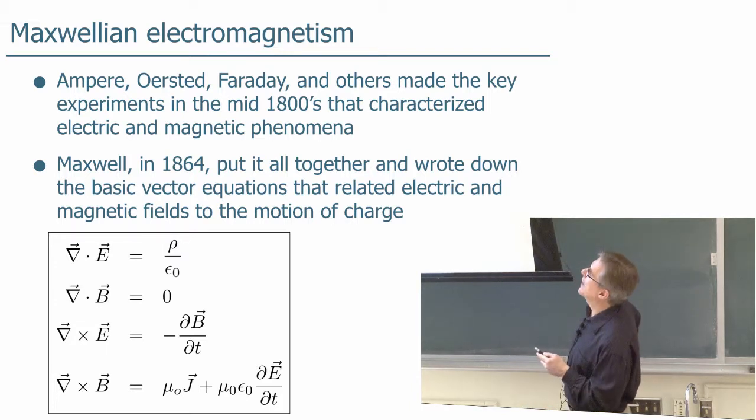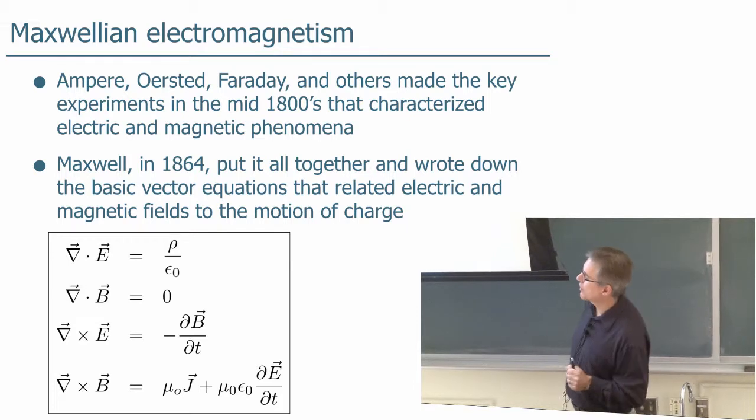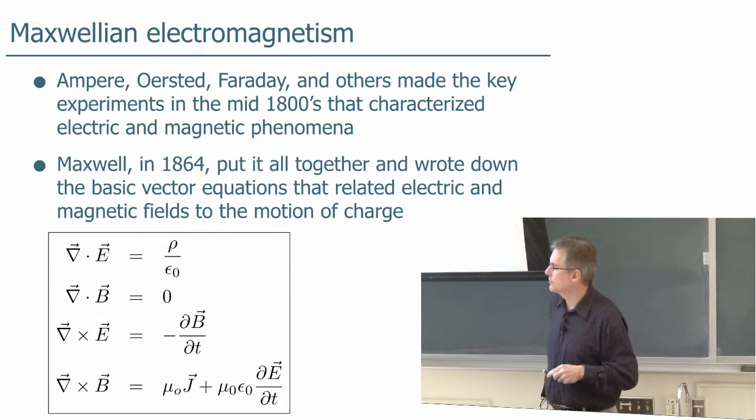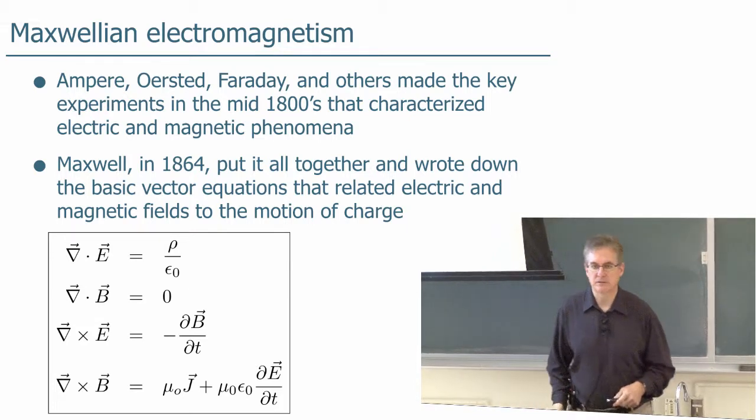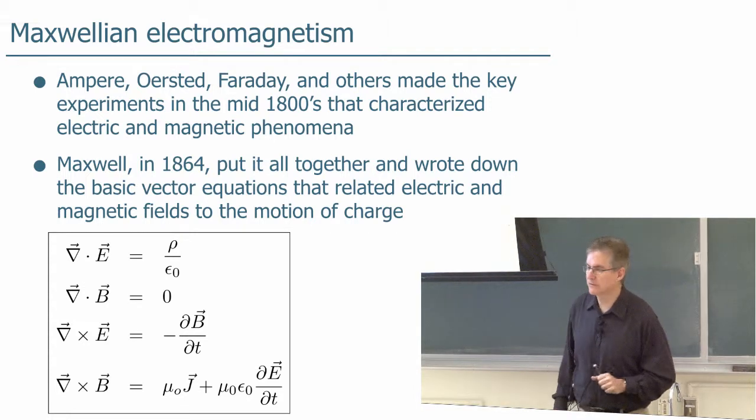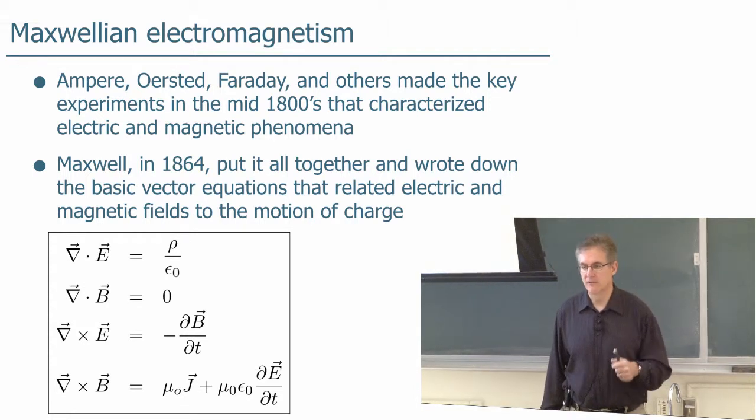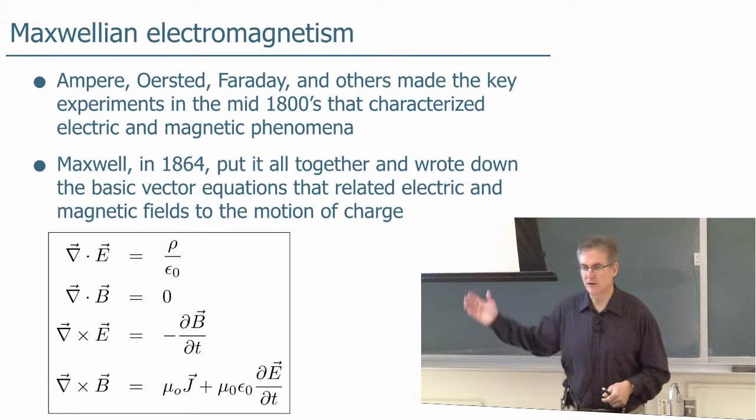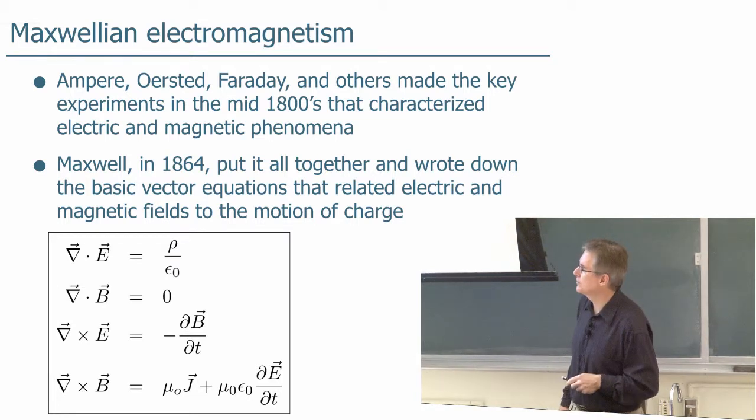So all these experiments were done by Ampere, Orsted, Faraday, and others, and once those things were known, Maxwell in 1864 put it all together into these four equations that we call Maxwell's Equations, and this is the fundamental basis of electromagnetic theory. Fits on a t-shirt, and if you hang around here in the physics department you'll no doubt see people wearing t-shirts with these equations on them.